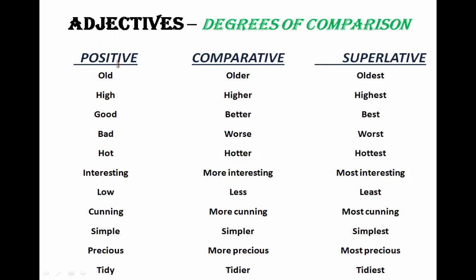Let me give you an example to make it clearer. Old, older, oldest. For 'old' — Ram is seven years old. Positive degree is used when no comparison is made. So Ram is seven years old is a very general statement about Ram. There is no comparison at all.